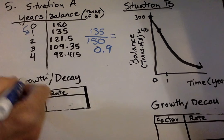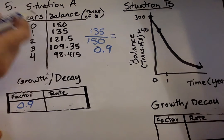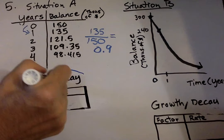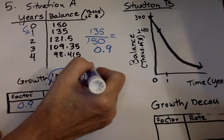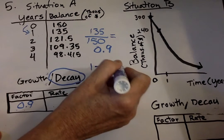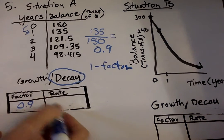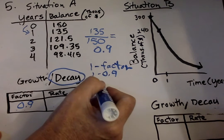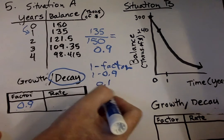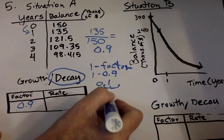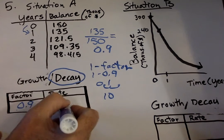Is it a growth or decay? Well, as the years are going up, the numbers are going down, so it's got to be a decay. So for our rate, it's 1 minus the factor. And then we have to make sure it's going to be in percent. So 1 minus 0.9 equals 0.1. Change it to a percent, two places over, and your answer is going to be 10%.